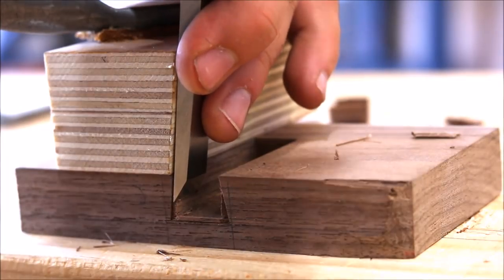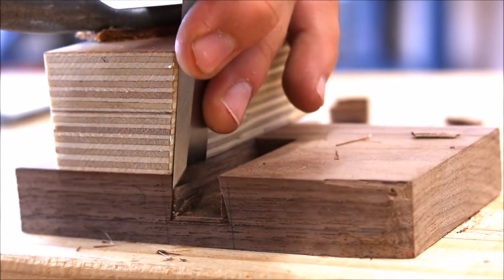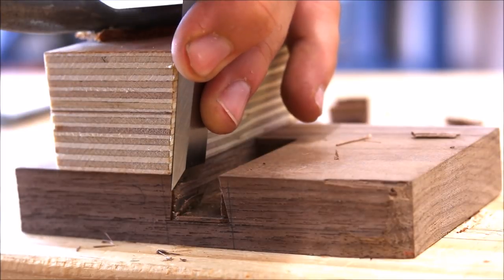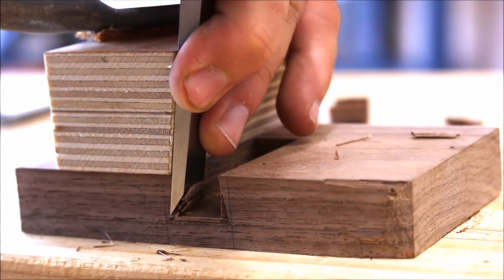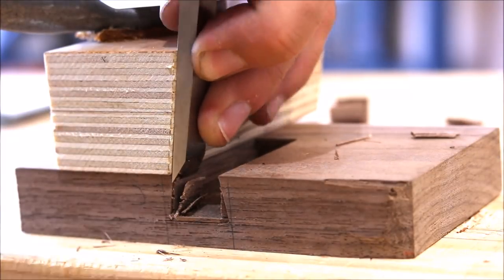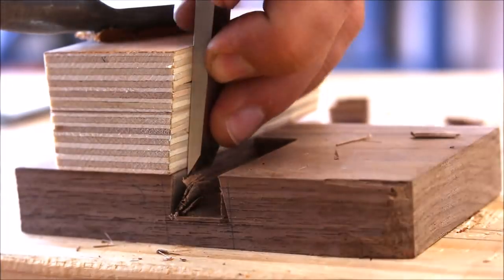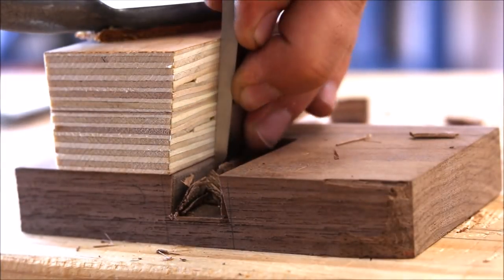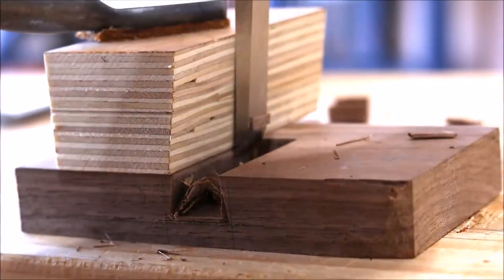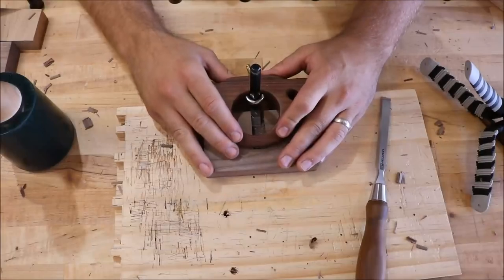Now that I'm almost to the bottom, I'm going to take that same block that I used earlier that has the exact angle that I need, and I'm going to use that as a reference surface for my chisel, and I will start paring down. Now I know my angle is going to perfectly match the angle on the other piece.